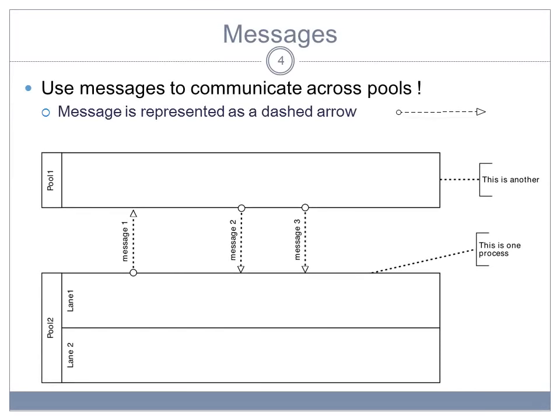Messages are used to communicate across pools, and the message is represented as a dashed arrow that goes from one pool to the other one, or from an activity in one pool to an activity in the other pool.